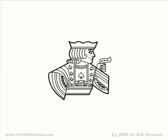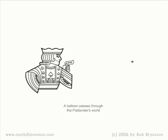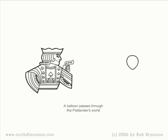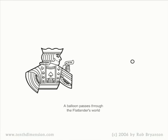And a flatlander, trying to view our three-dimensional world, would only be able to perceive shapes in two-dimensional cross sections. A balloon, for instance, would start as a tiny dot, become a hollow circle which inexplicably grows to a certain size, then shrinks back to a dot before popping out of existence.